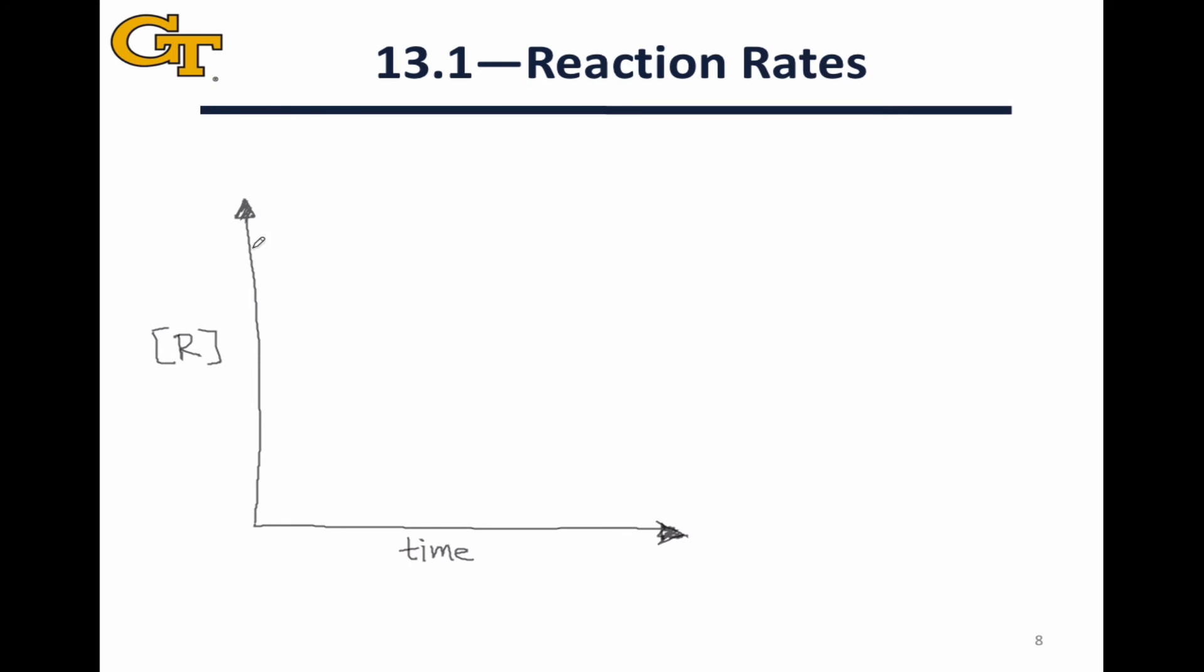So we might measure that concentration using something like an absorbance, for example, and we'll start somewhere at a non-zero concentration of reactant, and as the reaction occurs, that concentration will decrease. We will record the concentration at certain time points as the reaction occurs, and we might get a graph that looks like this.